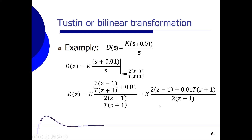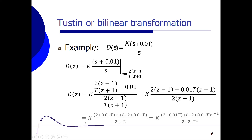Rearranging the numerator by collecting z terms, we get D(z) = k times [(2 + 0.01T)z + (−2 + 0.01T)] divided by (2z − 2). Again, to implement in Simulink, we divide numerator and denominator by z to obtain negative powers of z, giving the final expression with z⁻¹ terms in both numerator and denominator.